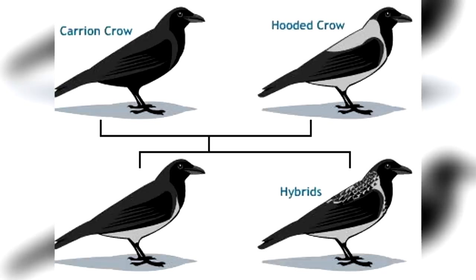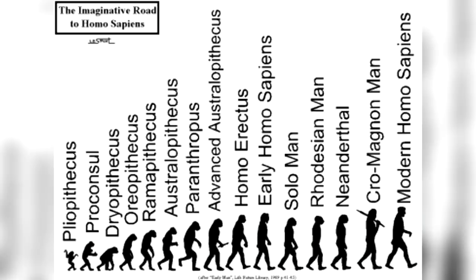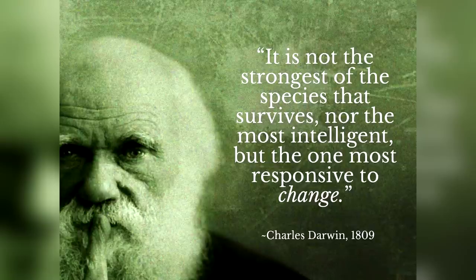Speciation stretches back over 3.5 billion years, during which life has existed on Earth. It is thought to occur in multiple ways, such as slowly, steadily and gradually over time, or rapidly from one long static state to another. Evolution is the change over time in one or more inherited traits found in populations of organisms. Inherited traits are particularly distinguishing characteristics — including anatomical, biochemical, or behavioural characteristics — that pass from one generation to the next. Evolution has led to the diversification of all living organisms, which are described by Charles Darwin as endless forms, most beautiful and most wonderful.